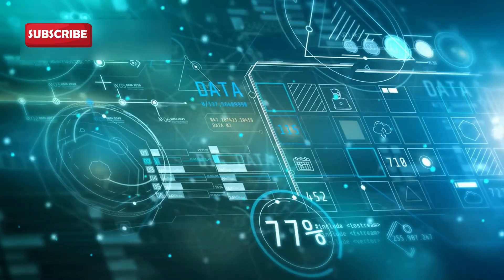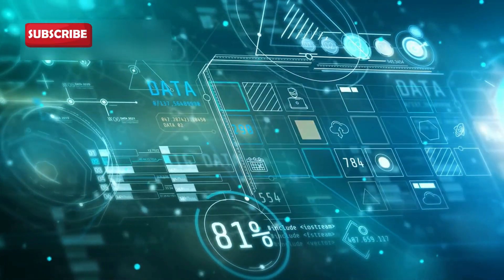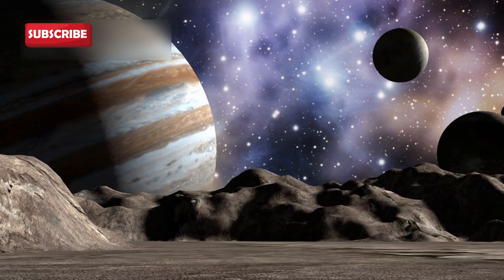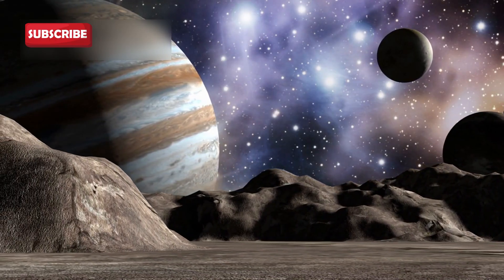For the first time, theories were replaced with real data. Scientists could now see how planets and moons actually behaved, rather than guessing from Earth. Voyager turned science fiction into science fact, expanding our view of the solar system in ways no telescope could.